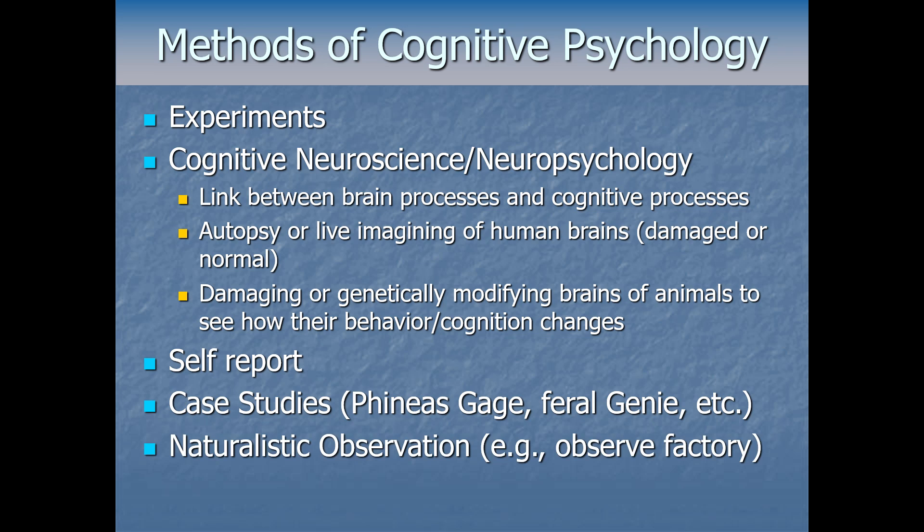Sometimes psychologists study cognition using naturalistic observation — just observing problem-solving processes among engineers in a factory, or collecting field data unobtrusively. The downside compared to the experimental method is that the data is correlational at best, so we have to be careful about making causation claims. But it can often help develop hypotheses and figure out whether it's worth investing further in a topic using more expensive experimental methods.